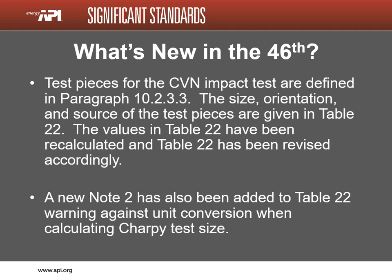Table 22 defines the relationship between the pipe diameter and wall dimensions and the size of the Charpy test sample that is required. The values in Table 22 were recalculated and some values are new. Manufacturers will need to check Table 22 to ensure that they are preparing the proper sized Charpy sample. A new Note 2 has also been added to Table 22, advising that there should be no conversion between SI and USC units of measure when calculating Charpy size. Note that there has been no change to the dimensions of the finished Charpy samples — the change is only in determining the largest size sample that is attainable based on pipe diameter and wall thickness.